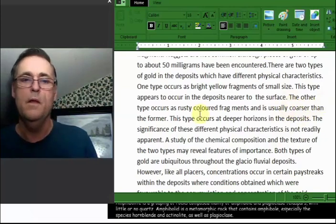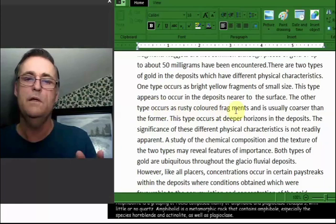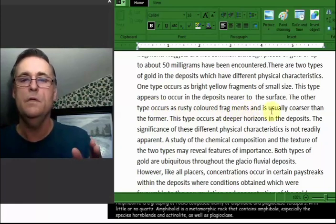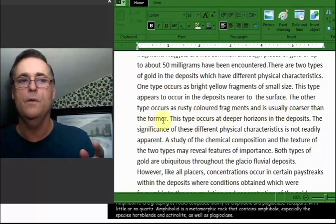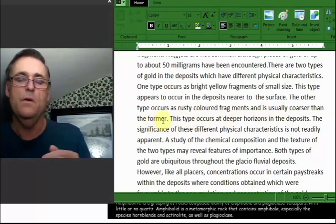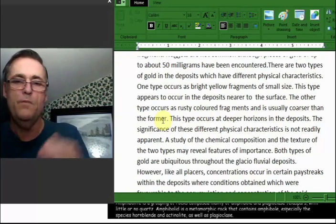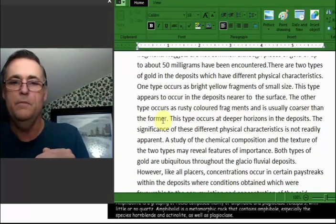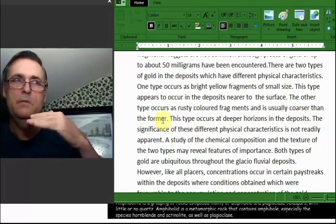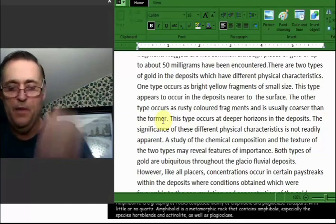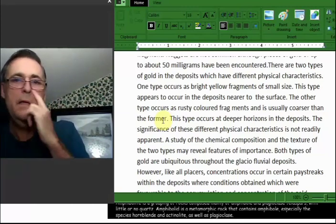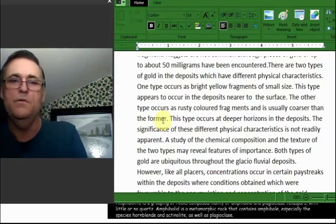The other type occurs as rusty colored fragments that is usually coarser than the former. So you've got a slightly heavier type of gold down on the bedrock, and a more coppery color. And up above, you've got this shiny stuff. So that would indicate there's two types of gold. Where did they come from? Well, I've got a bit of a suspicion.